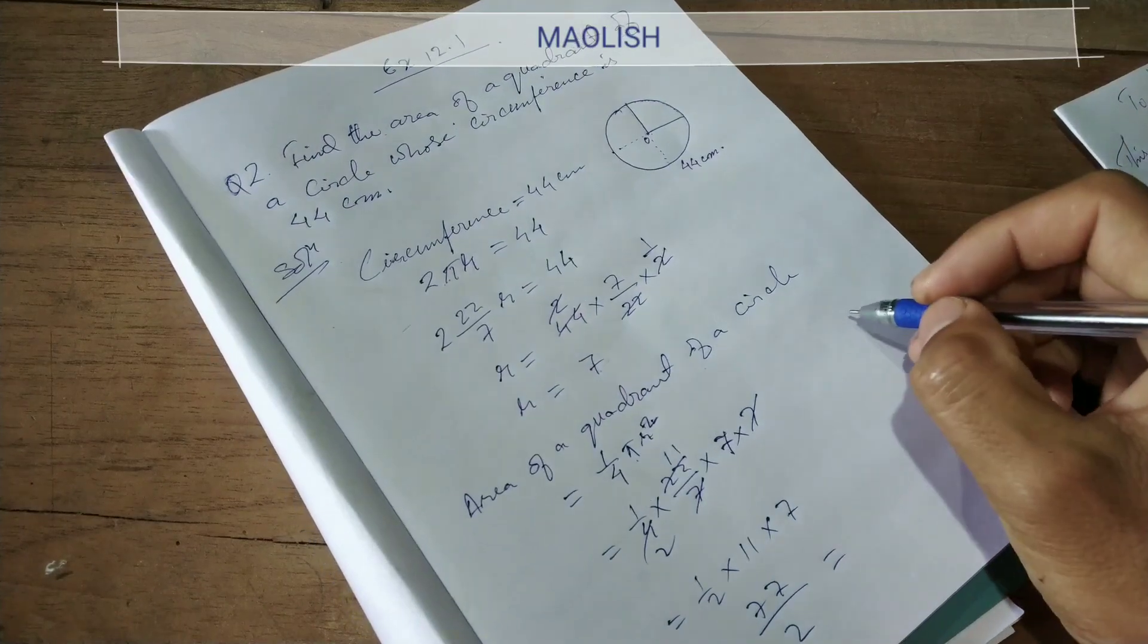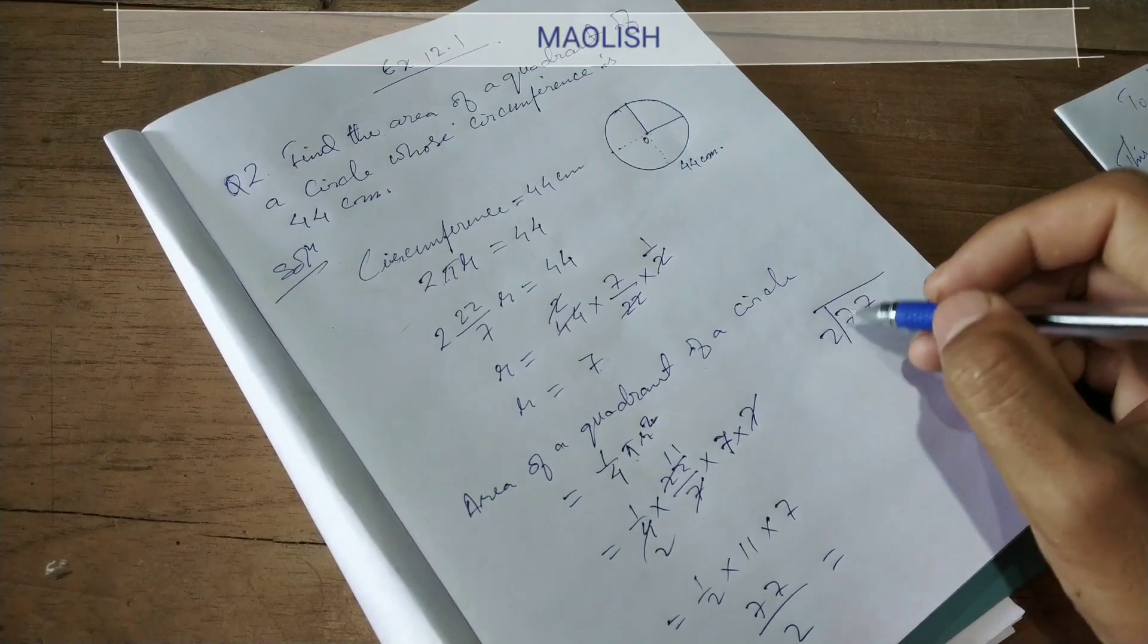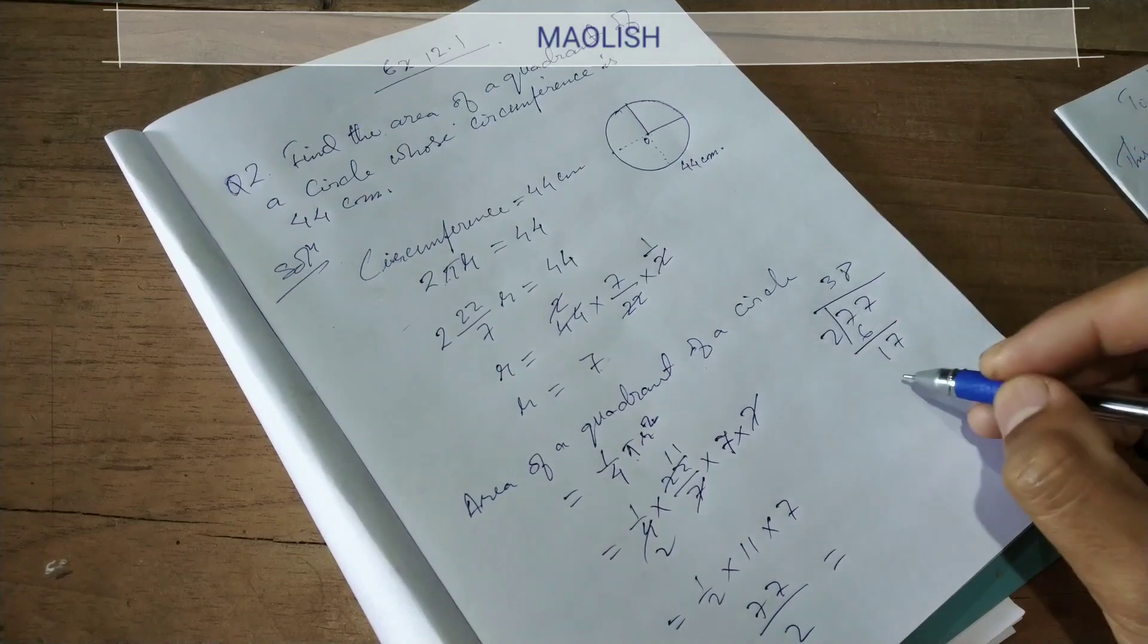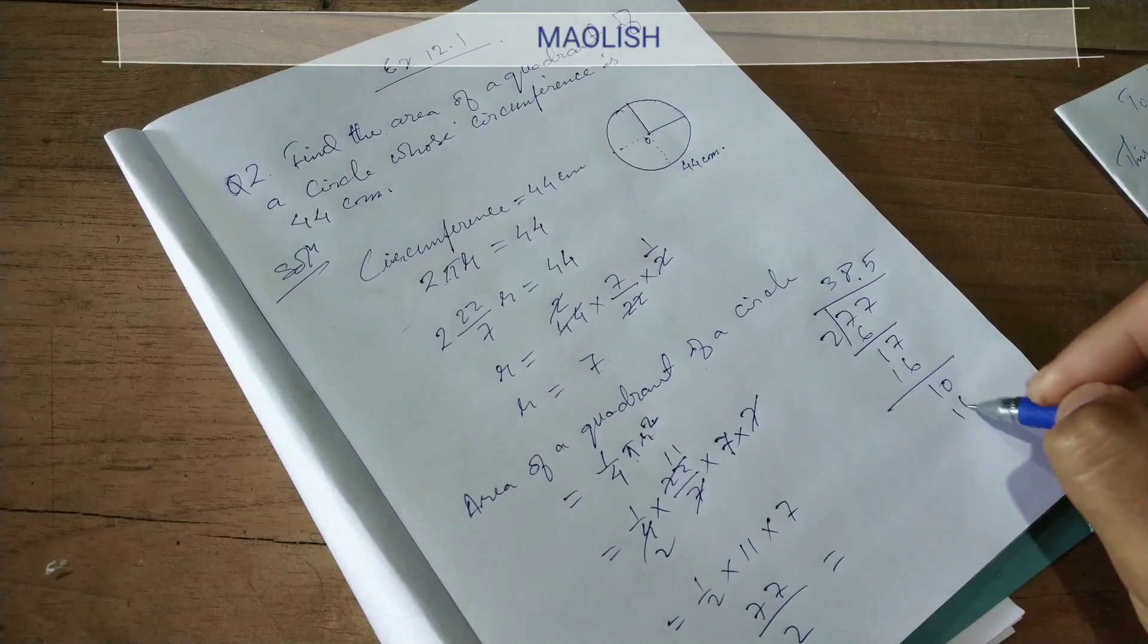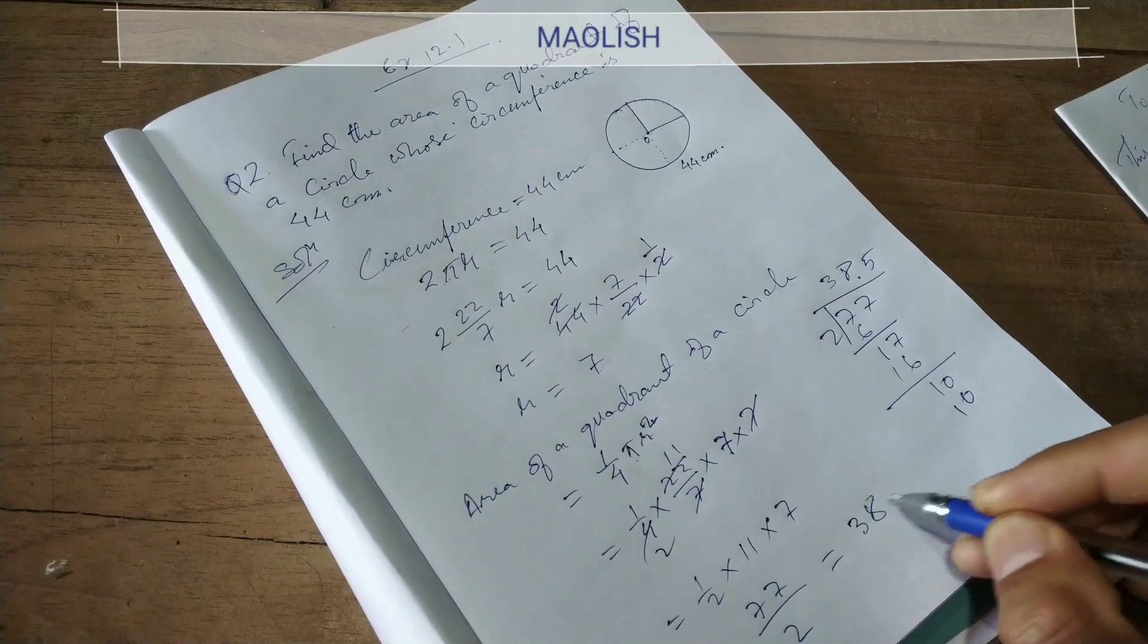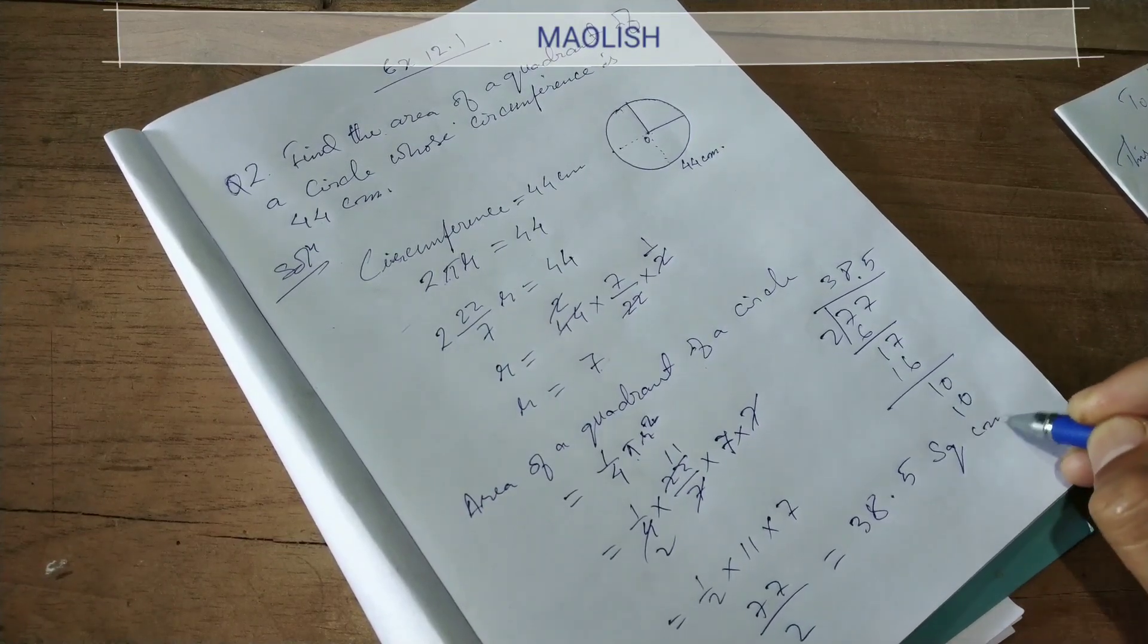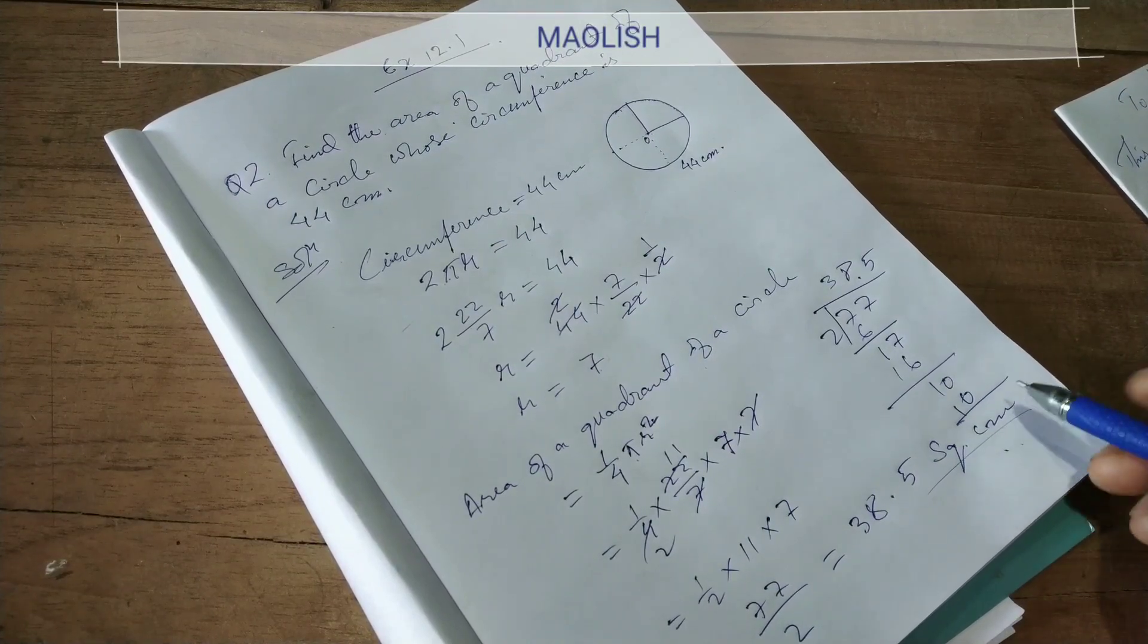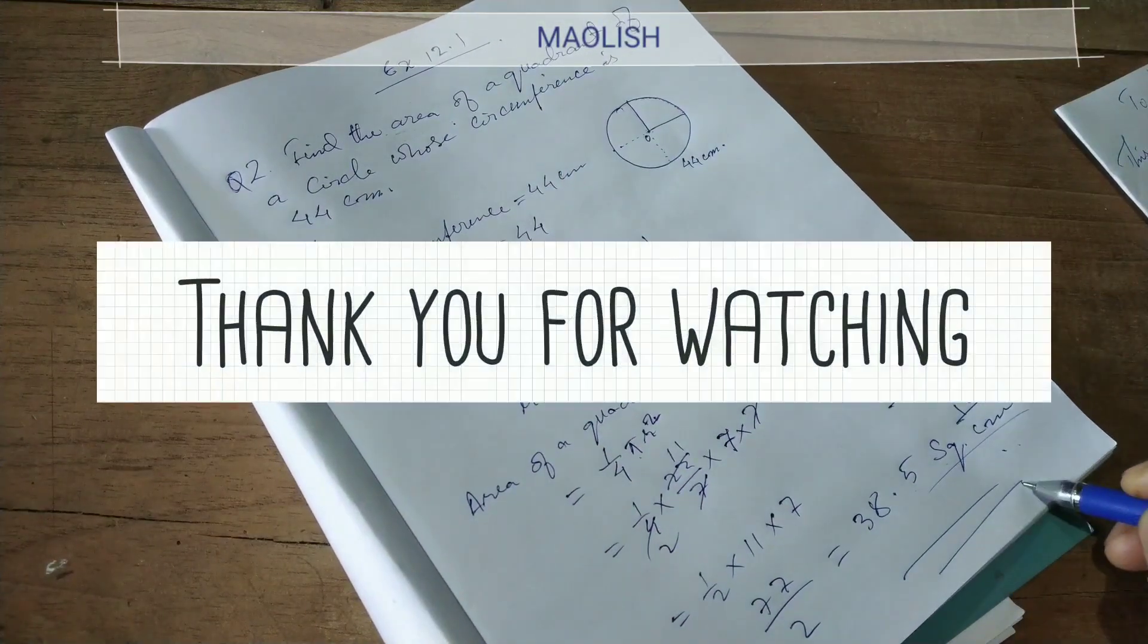77 by 2 which is equal to 38.5 square centimeter. Square centimeter for area. So this is the answer.